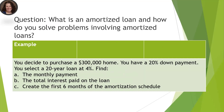Here's an example: you decide to purchase a $300,000 home. You have a 20% down payment. You select a 20-year loan at 4%. What we want to find today is: what is your monthly payment? How much did you pay in interest for the life of the loan — the whole 20 years — how much did you pay the bank for letting them lend you money? And you're going to create what we call an amortization schedule.